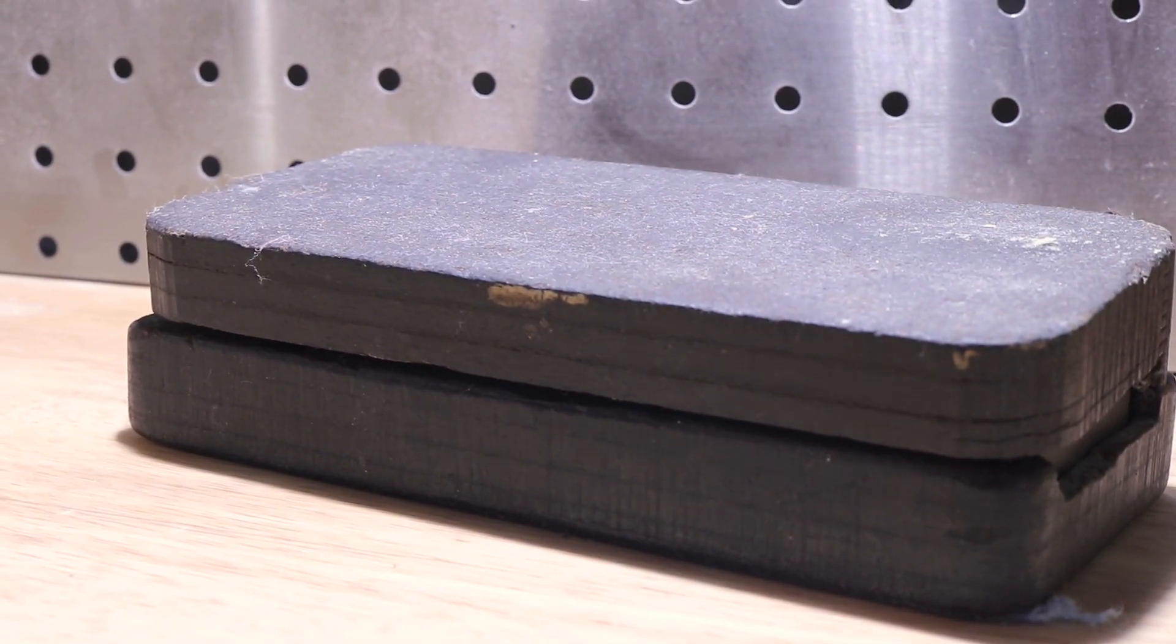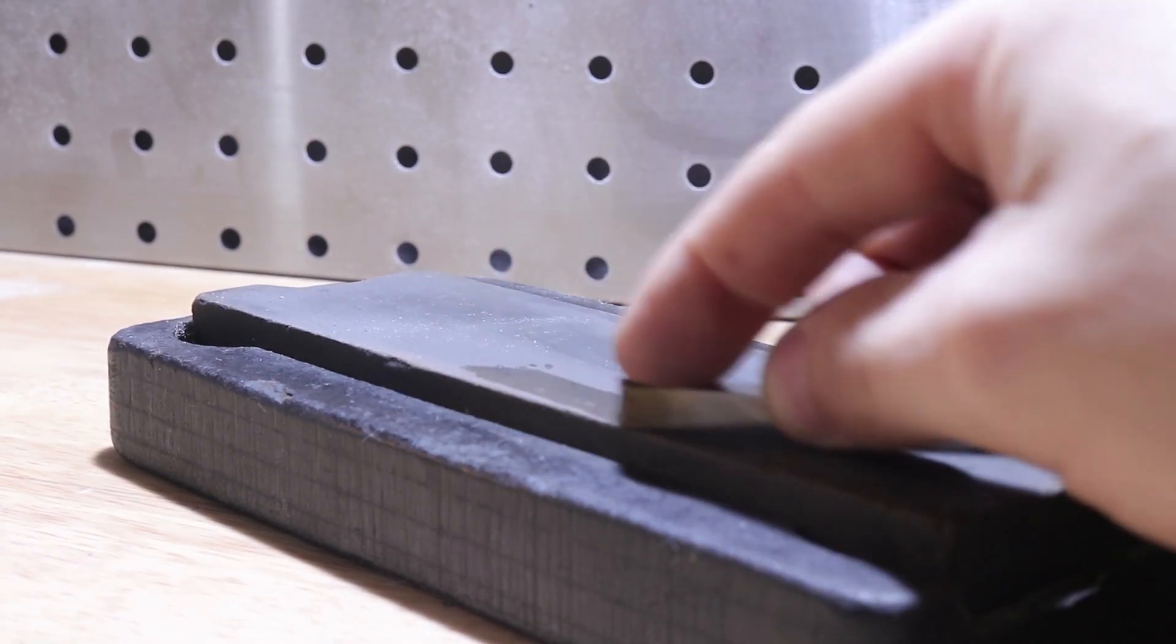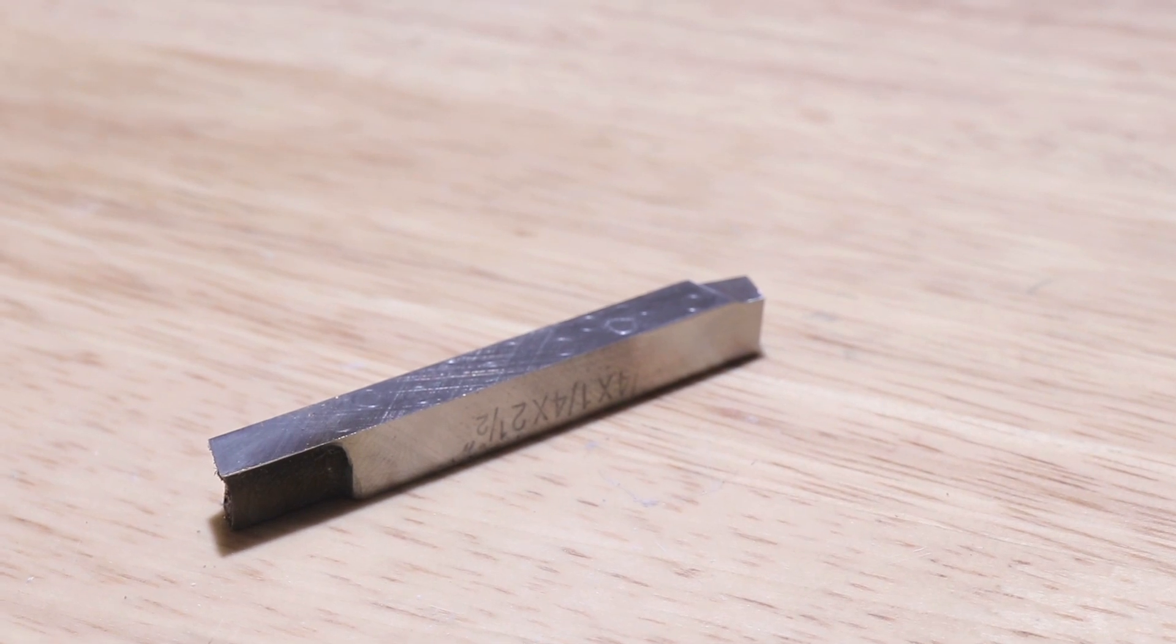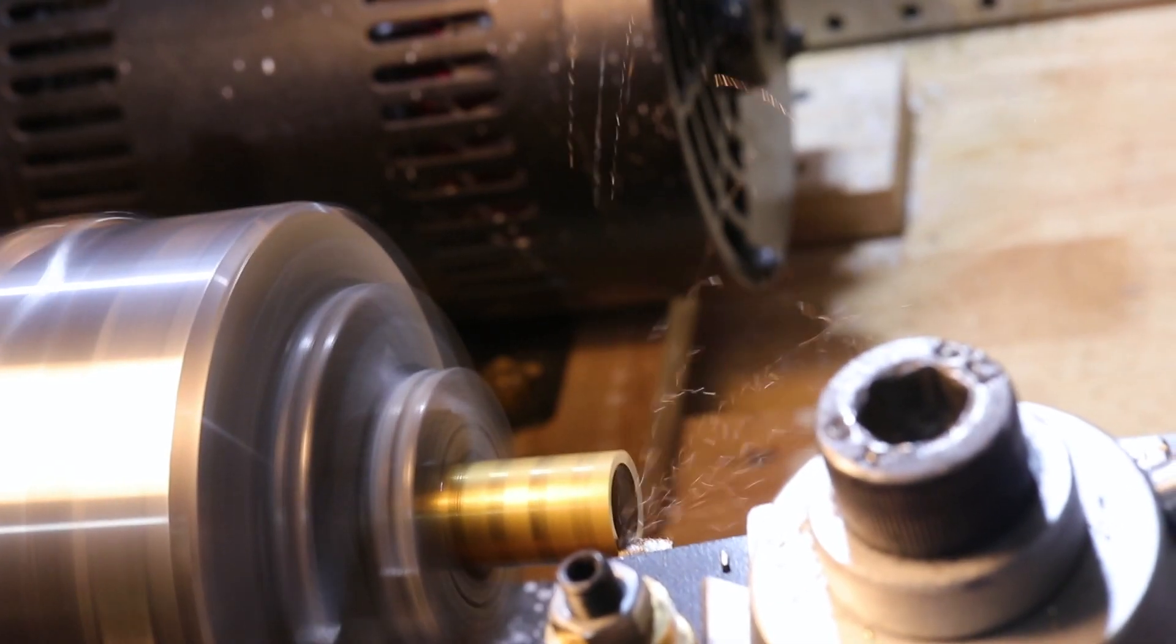At this point, we can knock off the burrs with a whetstone, and we'll have a perfectly good zero rake tool. This is perfect for brass, and when we use it for brass, we actually get some very nice chips from it.